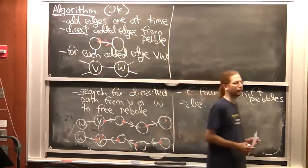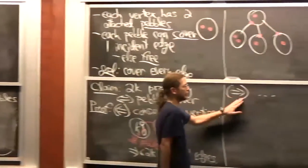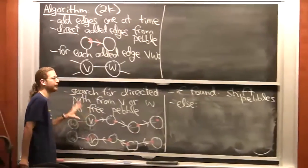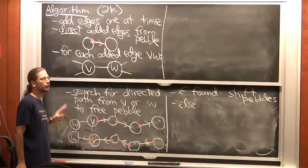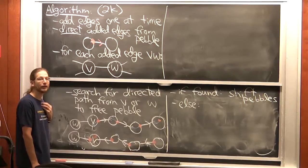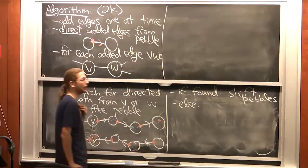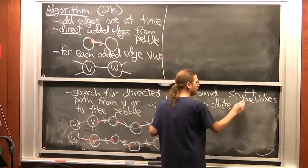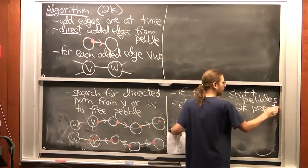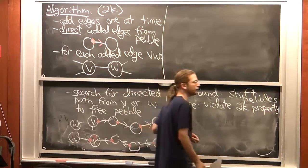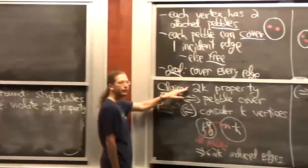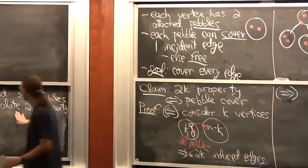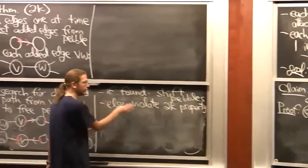But what if we can't find such a path? I claim that if this algorithm fails to find a path, you immediately know you do not satisfy the 2k property. We've already proved that a pebble cover implies the 2k property — so its contrapositive says: if you don't satisfy the 2k property, there's no pebble cover.